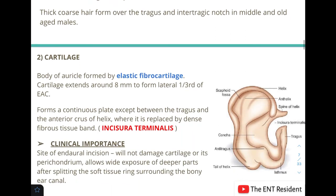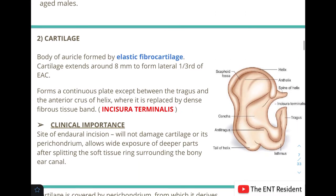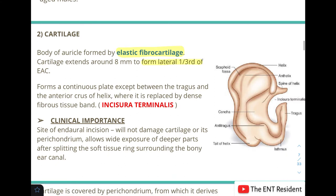The main structural component of the pinna is elastic fibrocartilage, which forms the whole of the pinna except for the lobule. This cartilage extends medially to continue with the cartilage of the external auditory canal, forming its lateral one-third as a continuous plate.